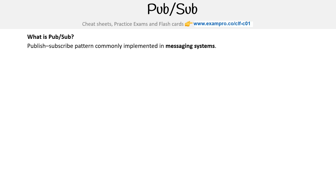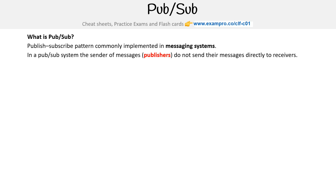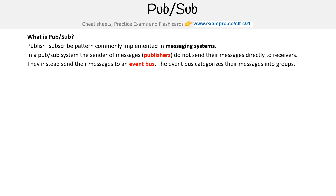We have another type of messaging system known as pub/sub. This stands for publish-subscribe pattern, commonly implemented in messaging systems. In a pub/sub system, the sender of messages — the publishers — do not send their messages directly to receivers. They instead send their messages to an event bus. The event bus categorizes their messages into groups, then receivers of messages — subscribers — subscribe to these groups.